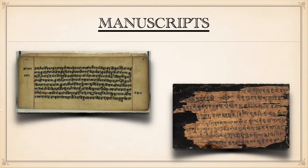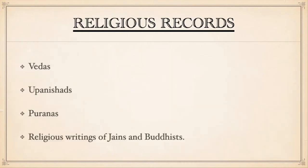Here are some pictures of manuscripts written on palm leaves — these are very old manuscripts. Religious records include Vedas, Upanishads, Puranas, and religious writings of Jains and Buddhists like Deepvamsa and Mahavamsa.